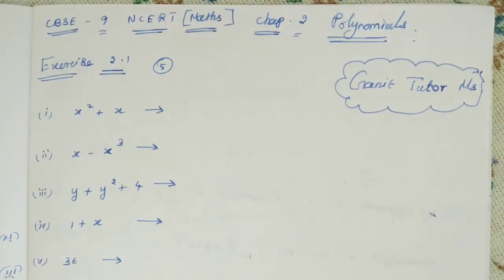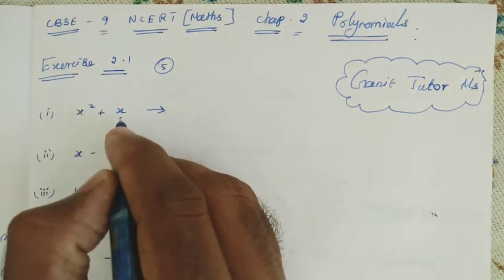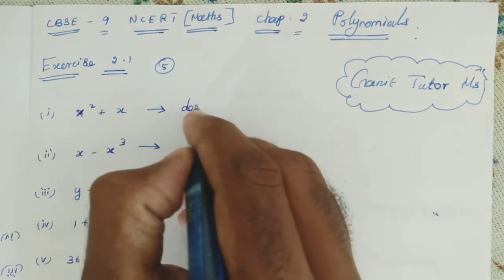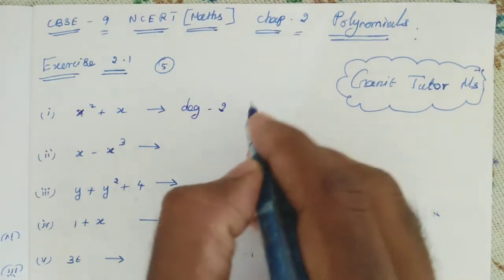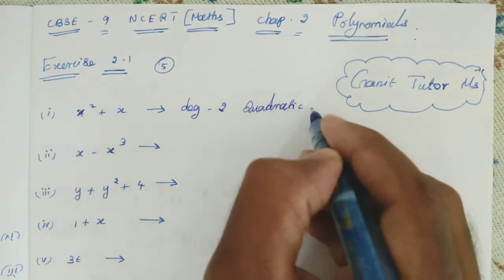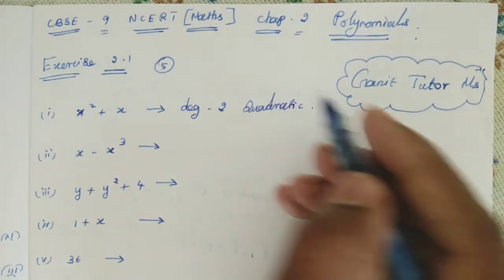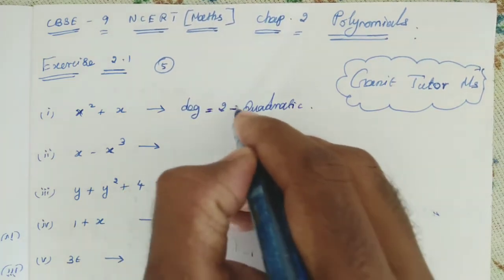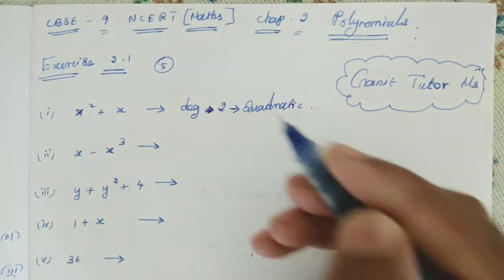Now we can classify the answers. You can check in first one. X squared plus X. What is the degree here? 2. So degree 2. What it is? It is a quadratic polynomial. So we can write quadratic. Degree is equal to 2, then it is called as quadratic.